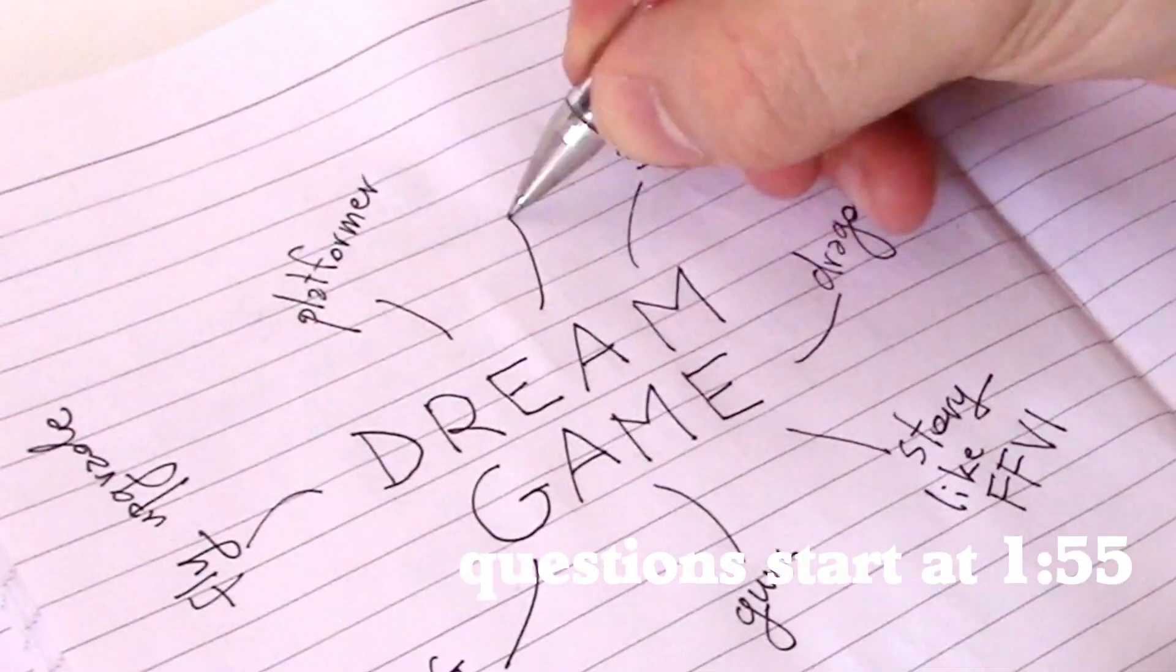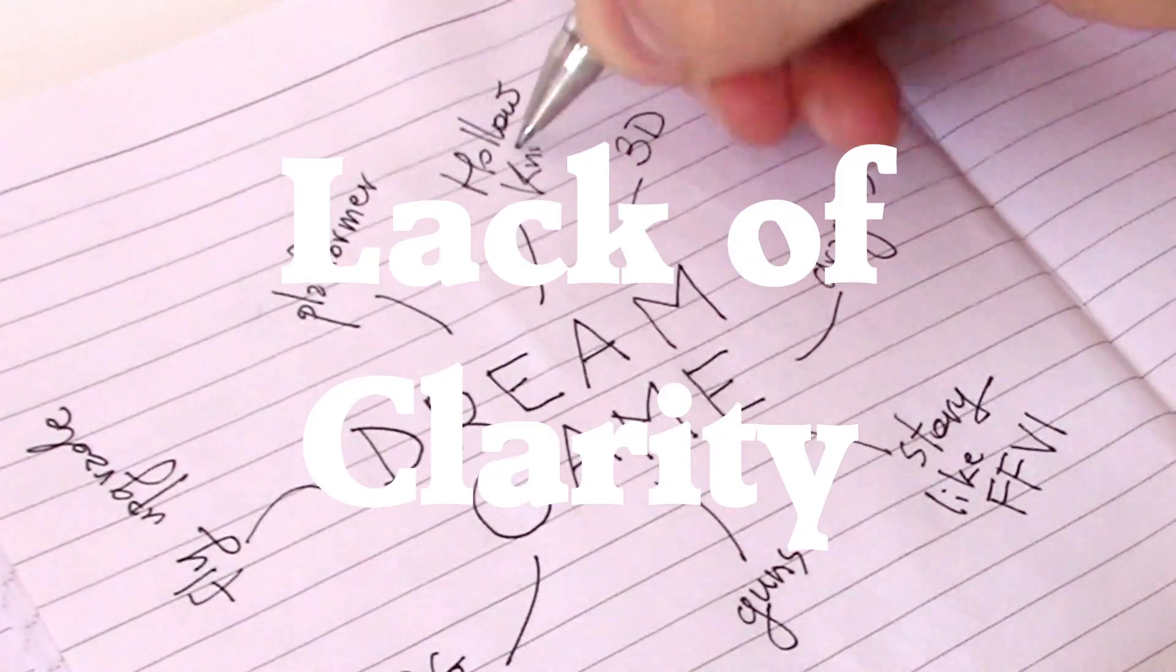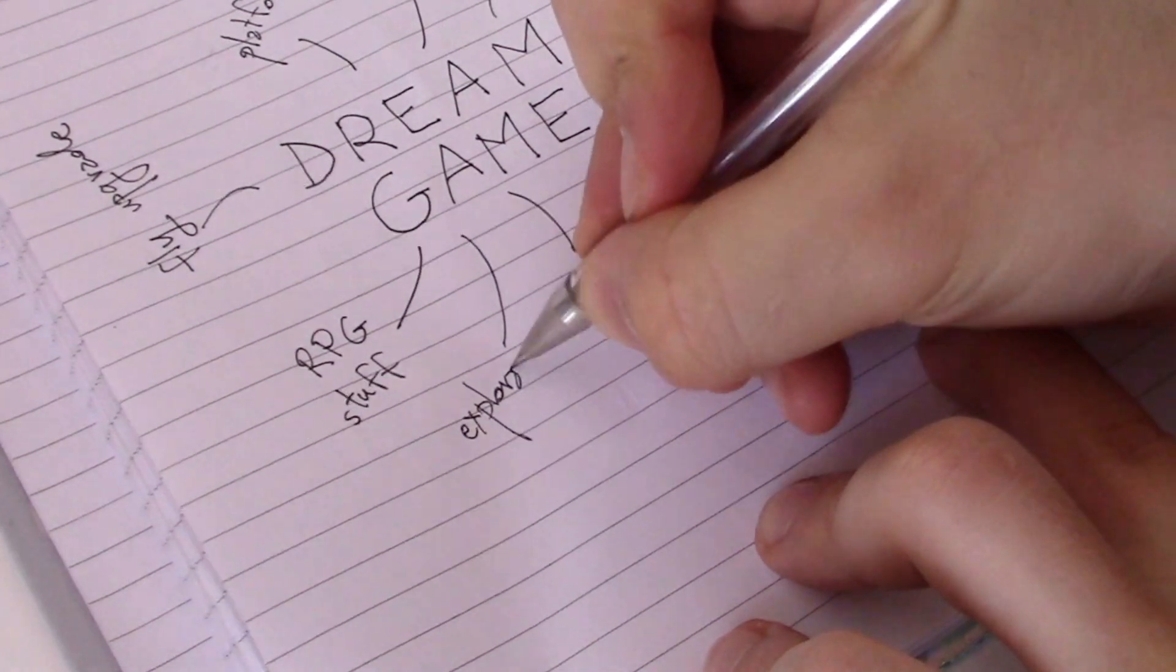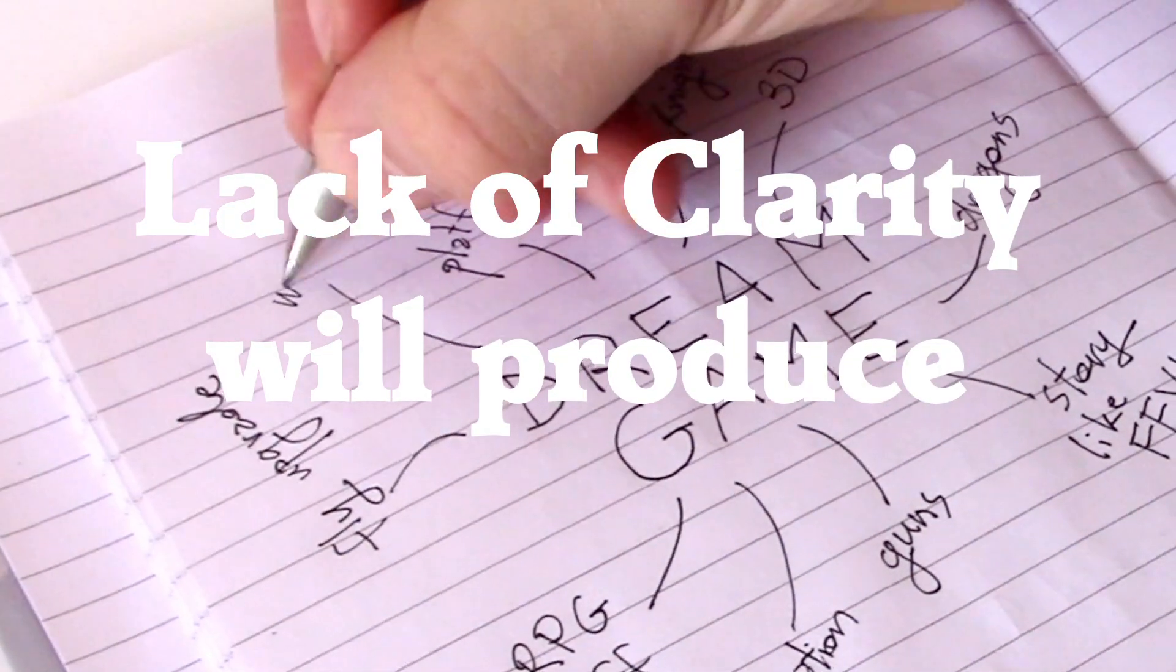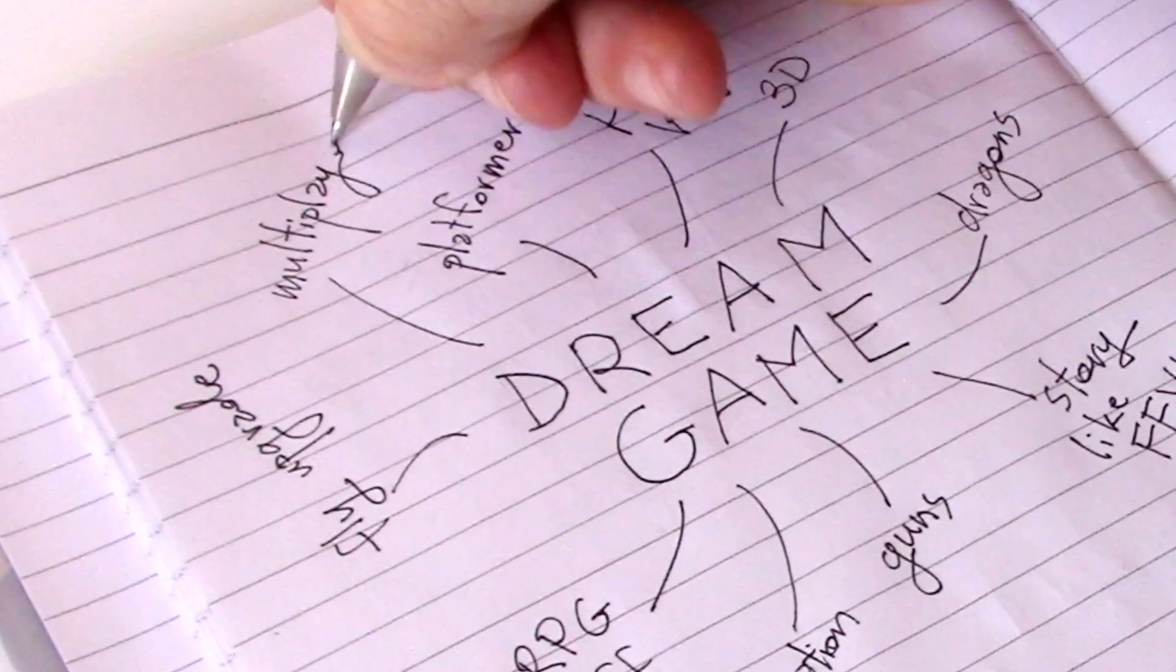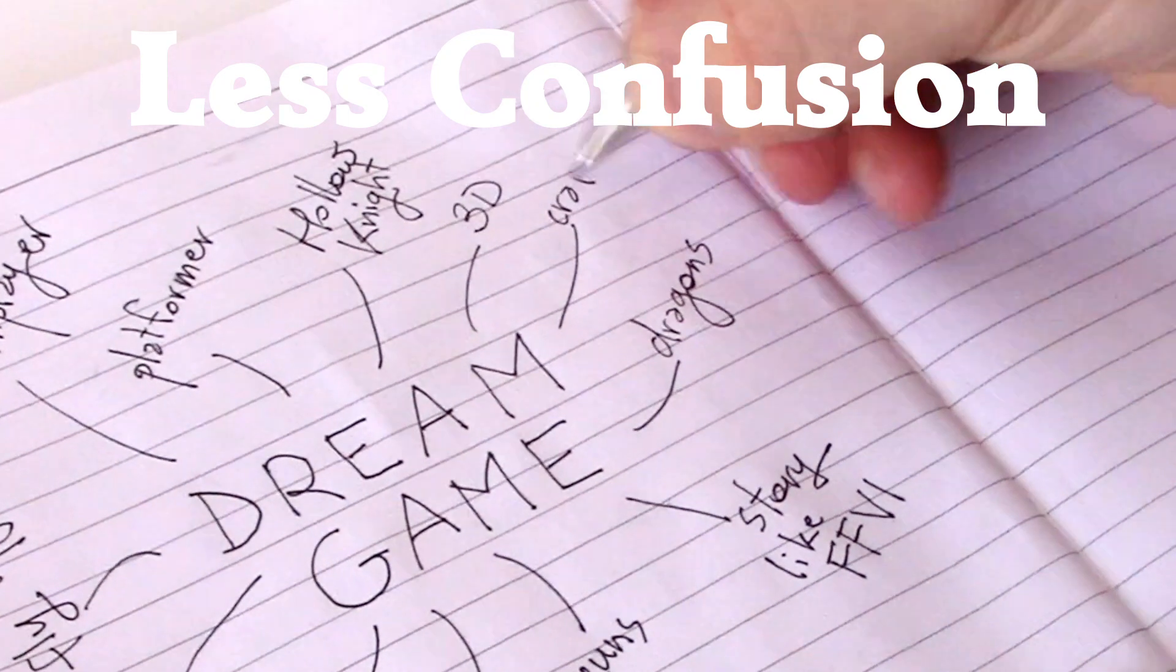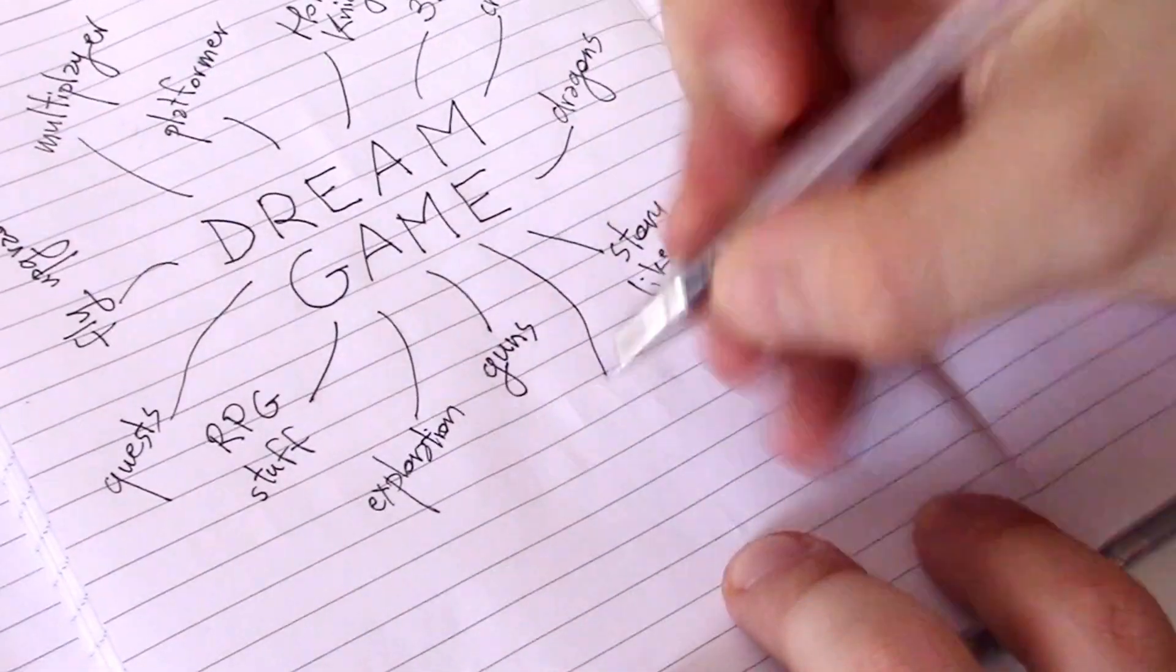And do you know why you lose motivation? I believe there is one big reason for it: lack of clarity. Let me say it again - lack of clarity will cause you to lose motivation. The lack of clarity is a cause and motivation loss is a consequence. And you know what's a very good strategy to remove a consequence from happening? Eliminate its cause. It's like basic physics. So today I'd like to address this very important problem and hopefully help you find a solution for it.